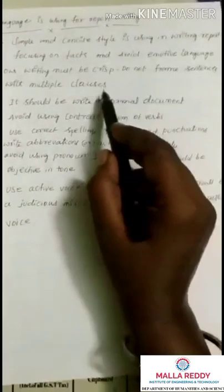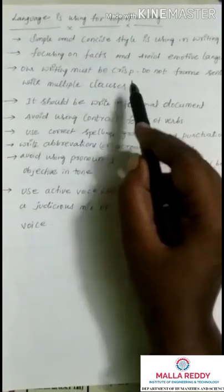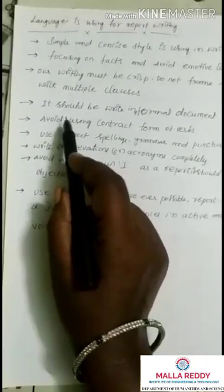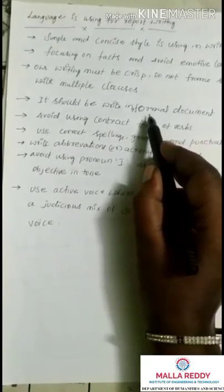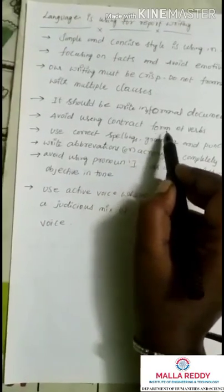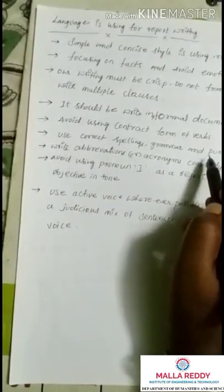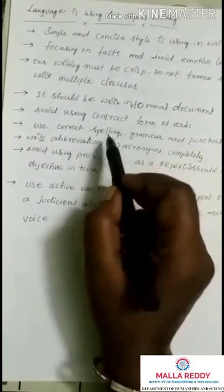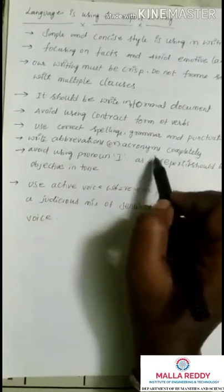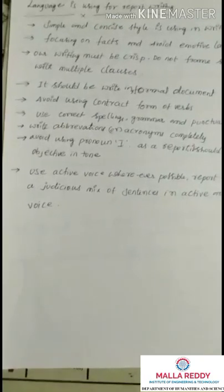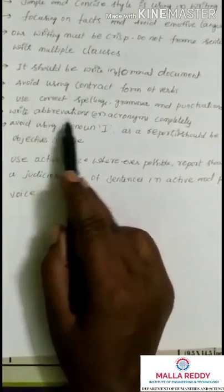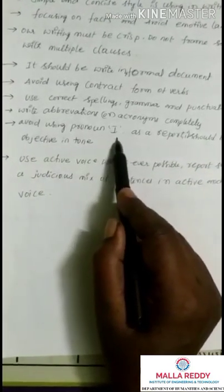Reports should be written in formal documents, not informal ones. Avoid contracted forms of verbs. Use correct spellings, grammar, and punctuation. Write abbreviations and acronyms completely — for example, write 'United Nations' rather than 'UN'.